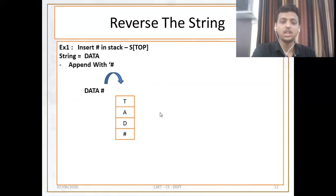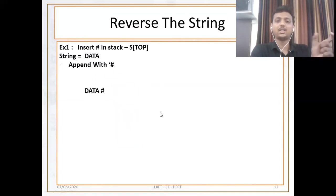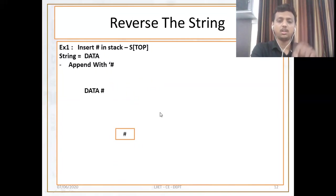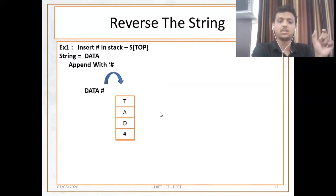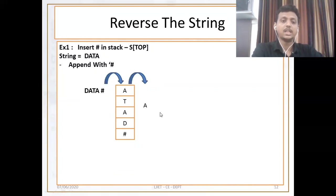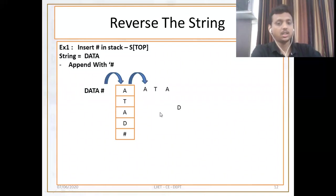What you do: first get the string, append with hash, then initialize the stack with hash, then push each and every element until and unless you get hash in the next pointer. Then start popping out elements: first a, then t, then a, then d. So here is your answer: a, t, a, d.